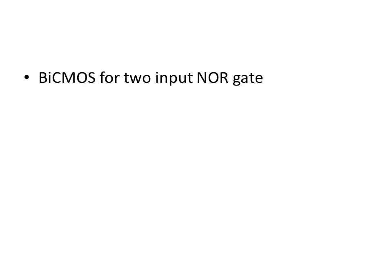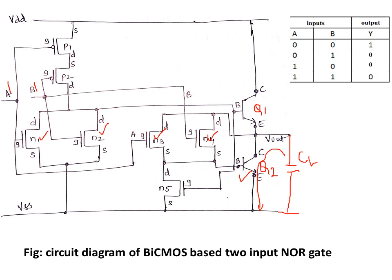In this video I will be continuing with the fourth model, discussing BiCMOS for a two-input NOR gate. This figure shows the circuit diagram for a BiCMOS-based two-input NOR gate. At the upper right corner you can see the truth table for a two-input NOR gate. The left part of the circuit diagram shows a CMOS design with two PMOS transistors and two NMOS transistors connected in parallel. At the output side we have two BJTs along with three more NMOS transistors. We'll analyze the circuit by considering the first input combination: zero, zero.